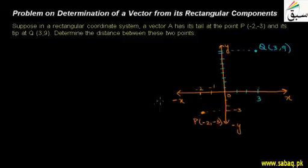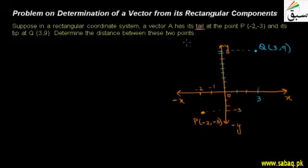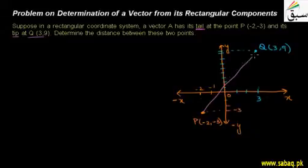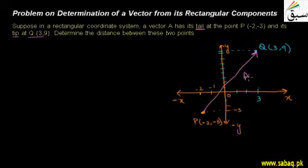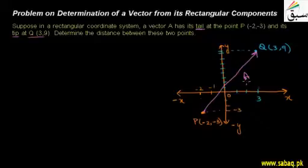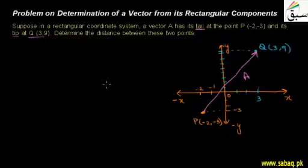Now we have two points plotted. We join them to form vector A, where the P point is its tail and the Q point is its tip — its head. So this vector represents A. We need to find the distance from P to Q, which is the magnitude of vector A, since the vector is showing a directed distance from P to Q.